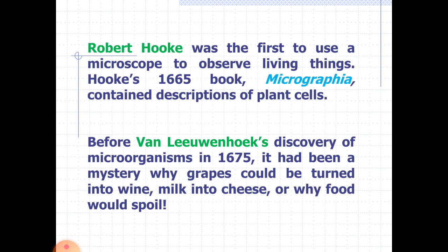Robert Hooke was the first to use a microscope to observe living things. Hooke's 1665 book Micrographia contained descriptions of plant cells. Before van Leeuwenhoek's discovery of microorganisms in 1675, it had been mysterious why grapes could be turned into wine, milk into cheese, or why food would spoil.